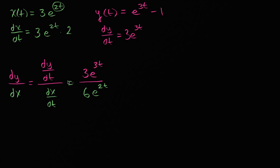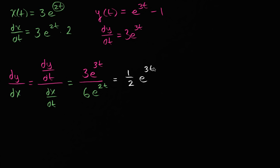We can simplify this a little bit. This is equal to one half — that's three over six — times e to the 3t minus 2t, using exponent properties. If I have three t's and take away two of those t's, I'm just going to have t. So the first derivative of y with respect to x simplifies to one half e to the t.